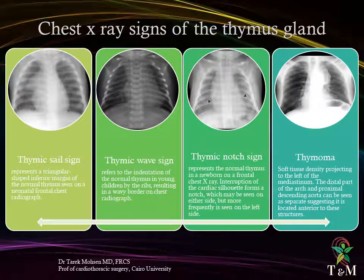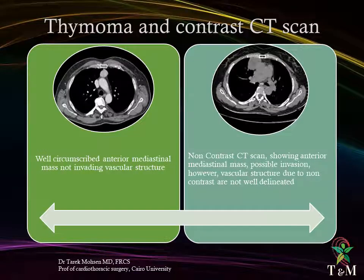Chest X-ray signs of the thymus gland: the thymic sail sign represents a triangular-shaped inferior margin of the normal thymus seen on a neonatal frontal chest radiograph. The thymic wave sign refers to the indentation of the normal thymus in young children by the ribs, resulting in a wave-like border on chest radiograph. The thymic notch sign represents the normal thymus in a newborn on frontal chest X-ray, where interruption of the cardiac silhouette forms a notch, more frequently seen on the left side. For thymoma, a soft tissue density projecting to the left of the mediastinum is seen. On contrast CT scan, it is very important to include contrast to visualize enhancing vascular structures and determine whether the mass is invading vascular structures, which will determine resectability.